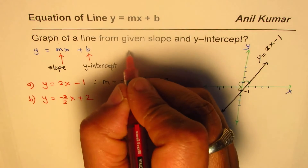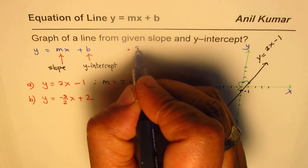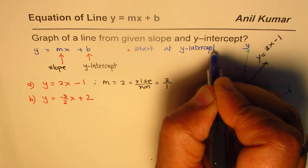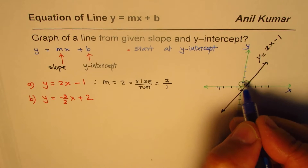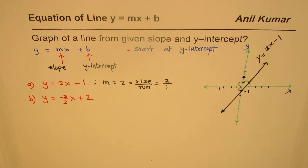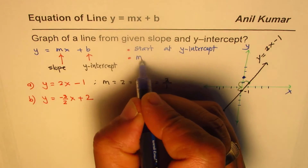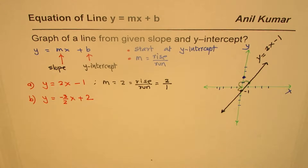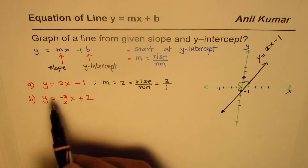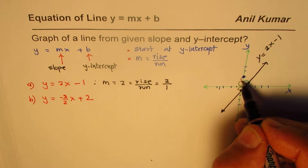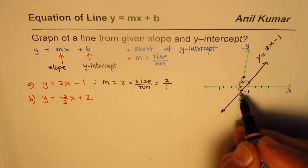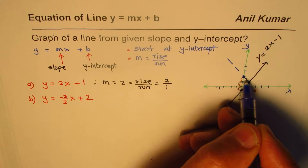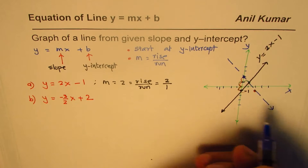The steps are: Step 1 — start at the y-intercept, which is 2 for us. Step 2 — use the slope. Slope m = rise/run = -3/2. A rise of -3 means go down 3 units (1, 2, 3), and a run of 2 means go 2 units to the right (1, 2). We land on our second point.